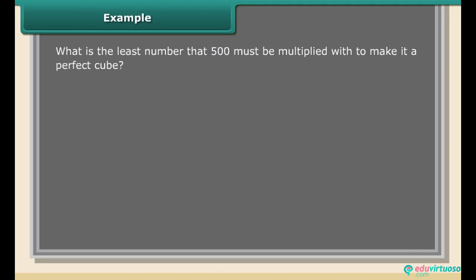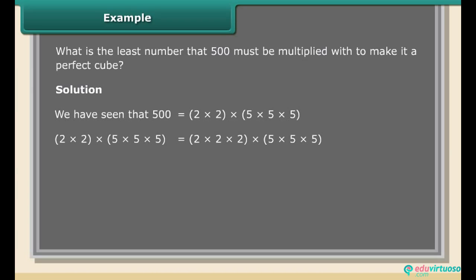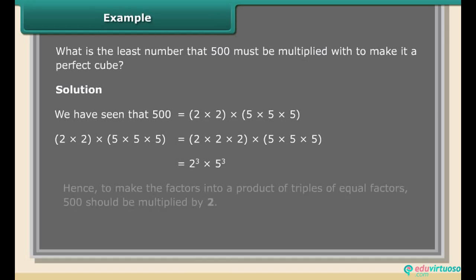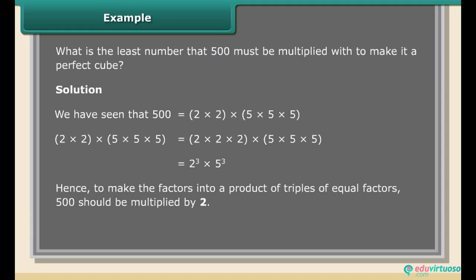Example: What is the least number that 500 must be multiplied with to make it a perfect cube? Solution: 500 = 2 × 2 × 5 × 5 × 5. This gives us 2² × 5³. Hence, to make the factors into a product of triples of each of the equal factors, 500 should be multiplied by 2.